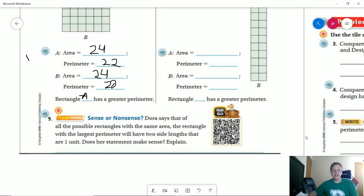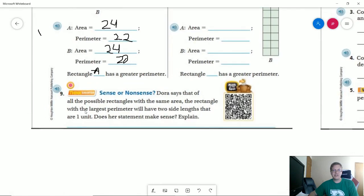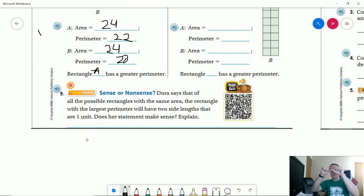Number nine, Doris says that of all the possible rectangles with the same area, the rectangle with the largest perimeter will have two side lengths that are one unit. So when I was mentioning this idea of making it as close to a straight line as possible, we're still going to be one unit high. So does that statement make sense? Yes.